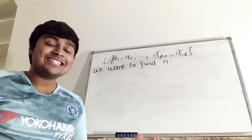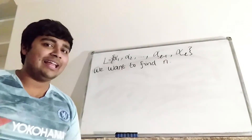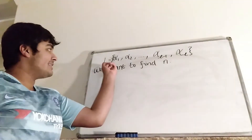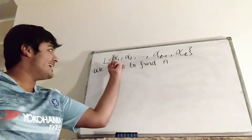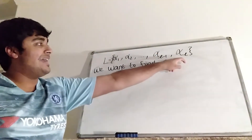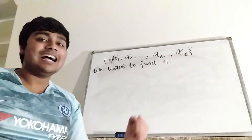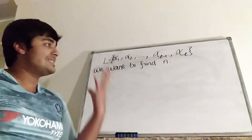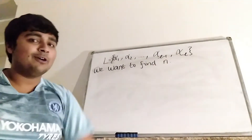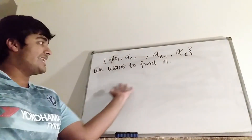So the solution to this problem is yes — given the list, we can actually reverse engineer and work out what n is. To prove that, let's call our list capital L, and it has elements alpha 1, alpha 2, all the way up to alpha l minus 1, alpha l. So we have little l elements in our list, and without loss of generality, alpha 1 < alpha 2 < alpha 3 < ... < alpha l minus 1 < alpha l. So this is an ordered list, and we want to find n from this.